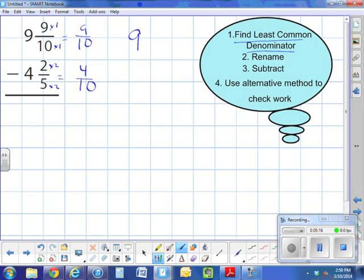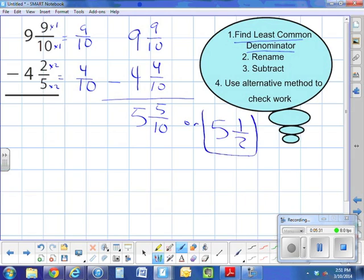Once I have that I'm going to go ahead and rewrite my problem to avoid any mistakes. So my new mixed number is 9 and 9 tenths minus 4 and 4 tenths. I take a look at my subtraction, there is no need to rename. Subtract, my answer is 5 and 5 tenths. Or in simplest form my answer is 5 and 1 half.